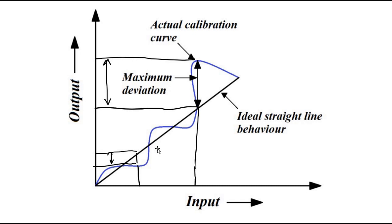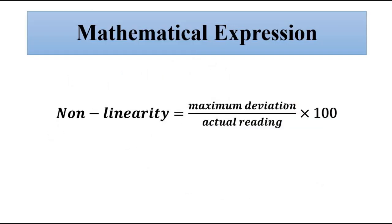Various linearization techniques are used to convert a nonlinear input-output relationship to an approximate linear relationship. The mathematical expression of nonlinearity is the maximum deviation between the ideal and actual readings, expressed as a percentage: the maximum difference between the ideal value and the actual value, divided by the actual value, multiplied by 100.